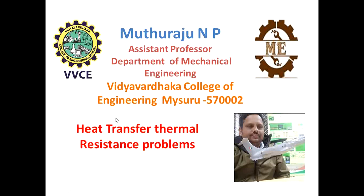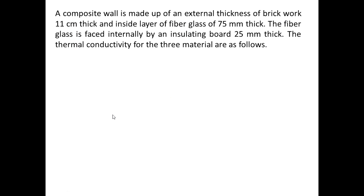A composite wall is made up of an external thickness of brickwork 11 cm thick, and inside layer of fiberglass 75 mm thick. The fiberglass is faced internally by insulating material 25 mm thick. The thermal conductivity of the three layers are as follows.